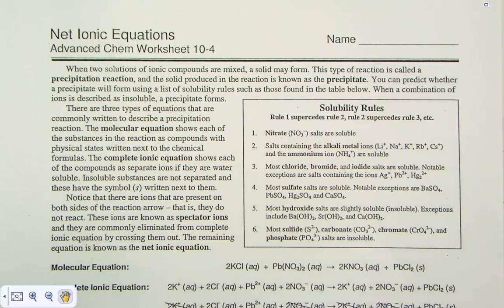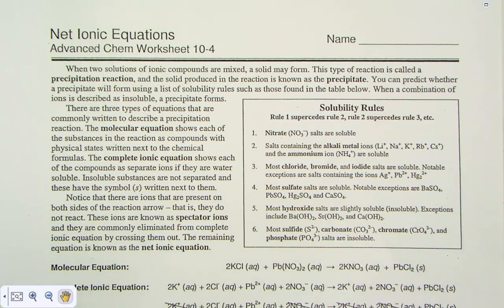You can predict whether a precipitate will form using a list of solubility rules, such as those found in the table below. When a combination of ions is described as insoluble, a precipitate forms.